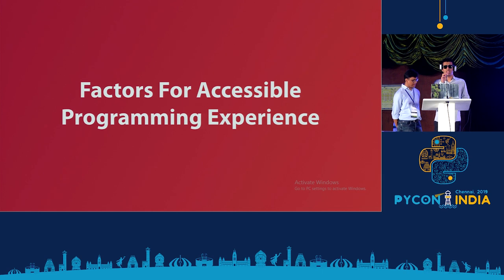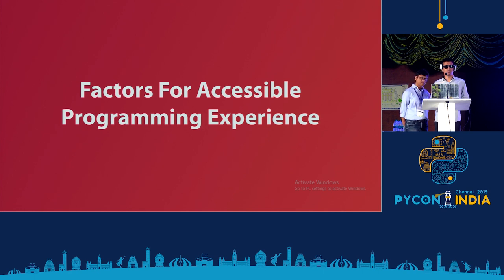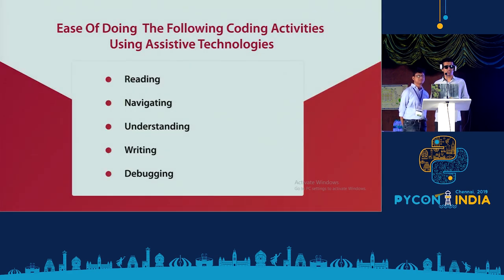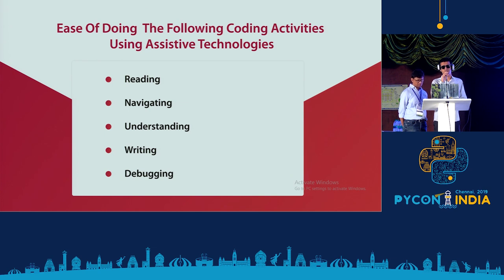Any programmer's main activities are reading, writing, debugging, and navigating the code. If all of these are accessible to a visually impaired person, they can easily code and carry out their work. Throughout this talk, we'll be discussing what the different challenges are in each of these activities.